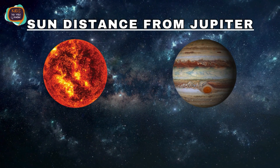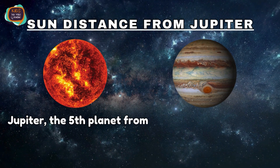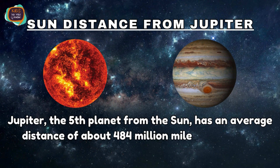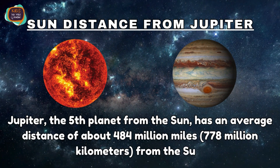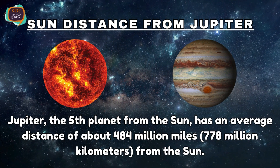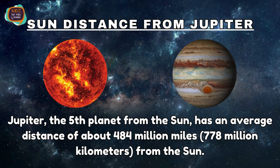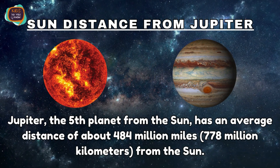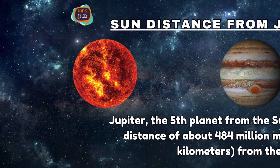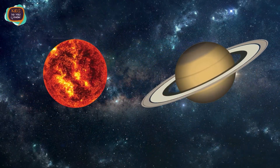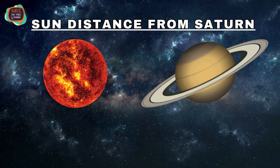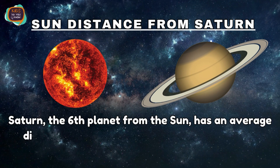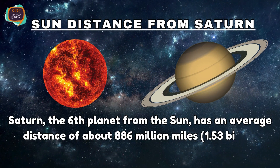Jupiter, the fifth planet from the Sun, has an average distance of about 484 million miles, or around 778 million kilometers from the Sun. Saturn, the sixth planet from the Sun, has an average distance of about 886 million miles, or around 1.53 billion kilometers from the Sun.